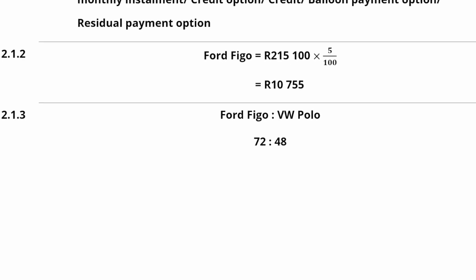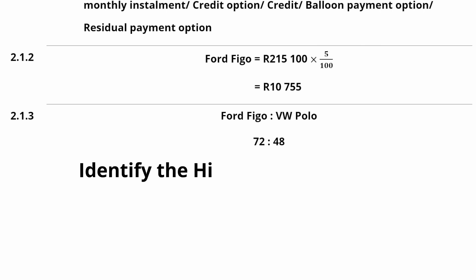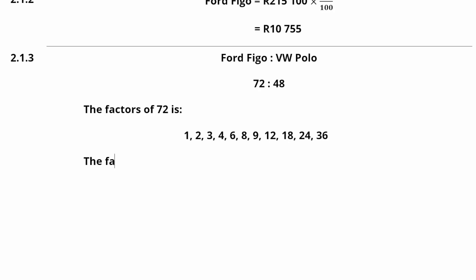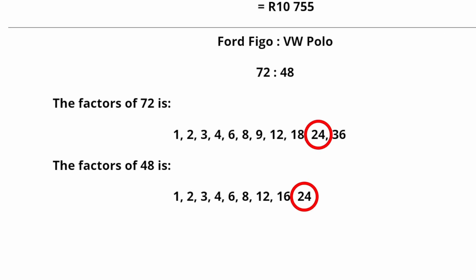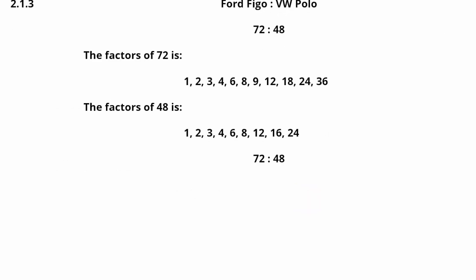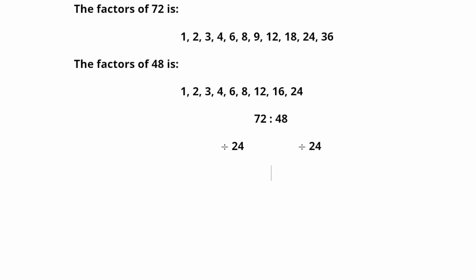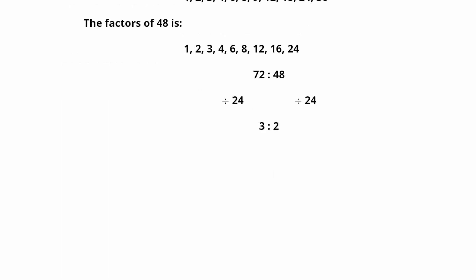To write this ratio in simplified form, we consider the factors of 72 and 48 to identify the highest common factor. The factors of 72 and the factors of 48 show that the highest common factor is 24. Dividing 72 and 48 by 24 gives us the simplified ratio of the term agreement of the Ford Figo to the VW Polo as 3:2.